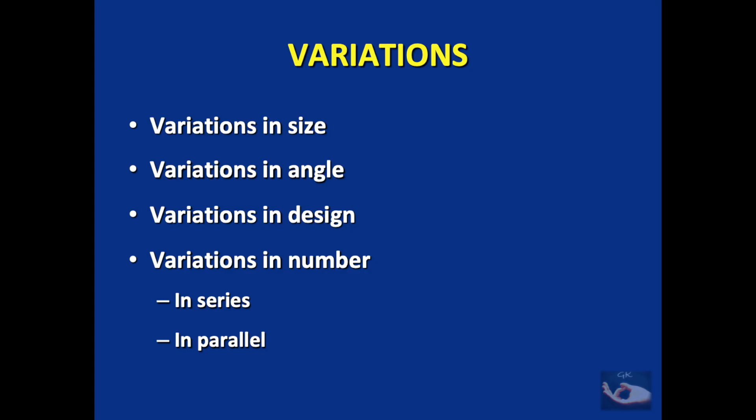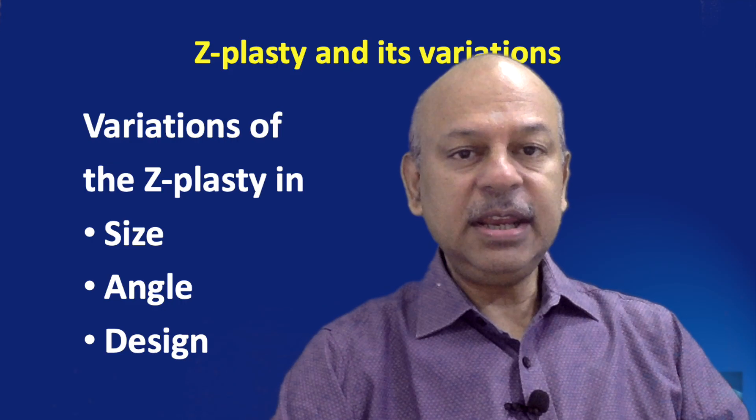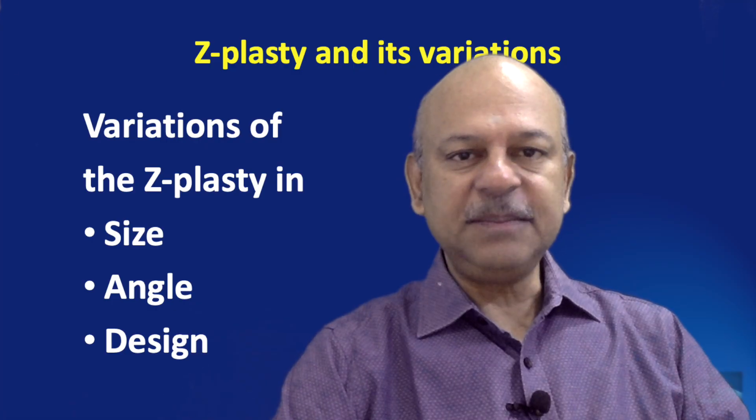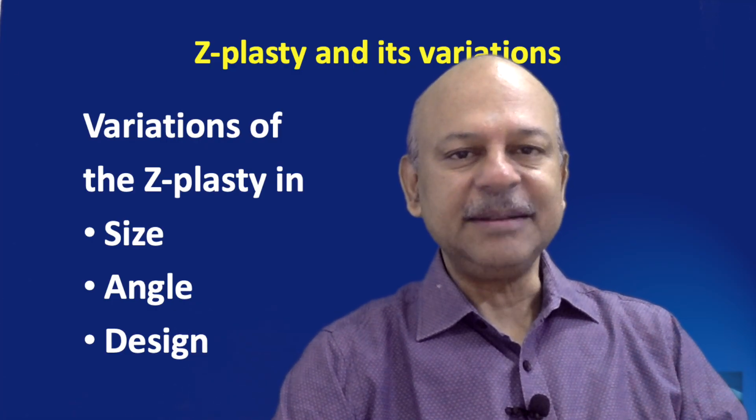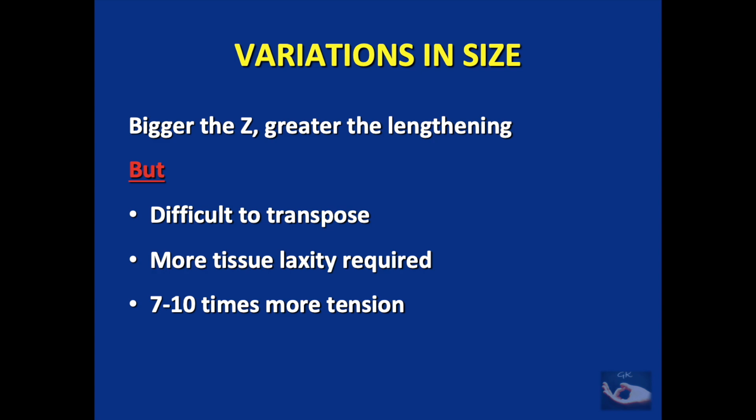What we saw was the classical Z-plasty. There are many variations to the Z-plasty — variations in size, angle, design, and number. The bigger the size of the Z-plasty, the greater will be the lengthening. But it may be difficult to transpose a large flap because of the large base, and more tissue laxity would be required.